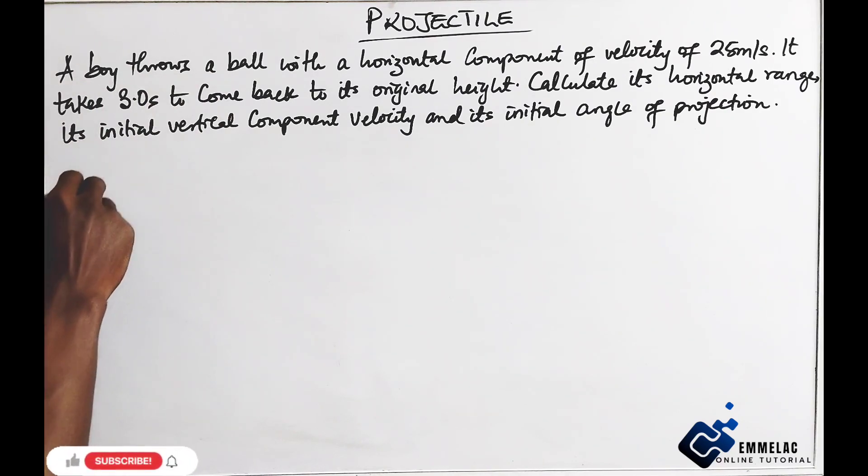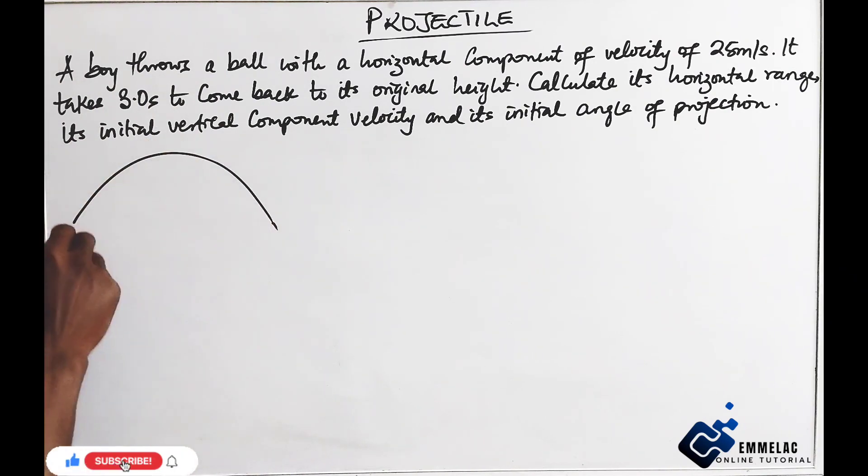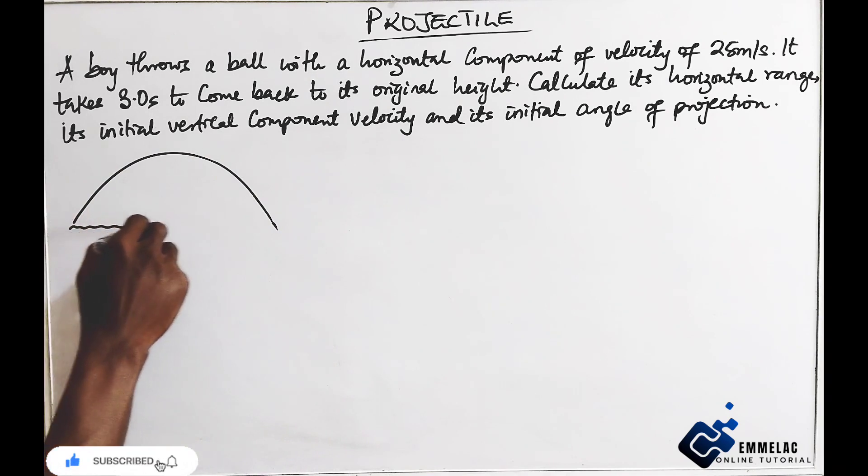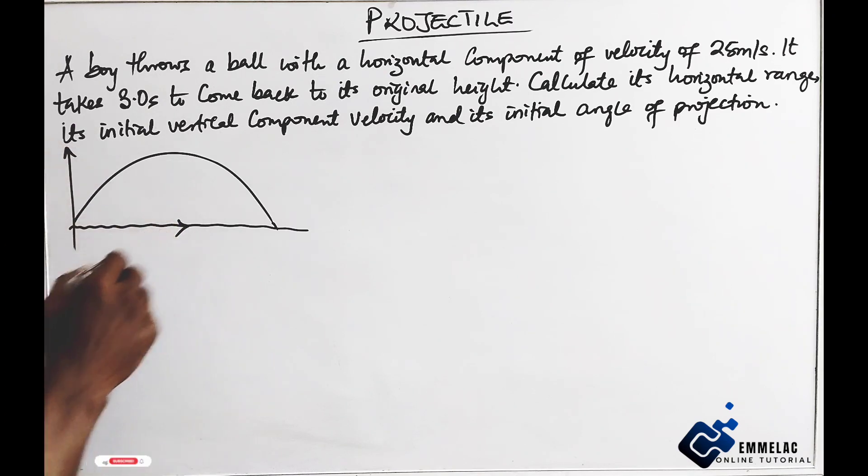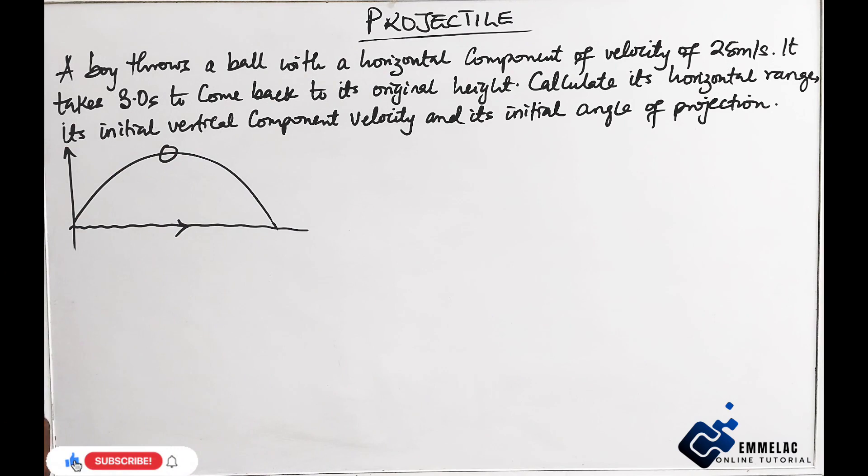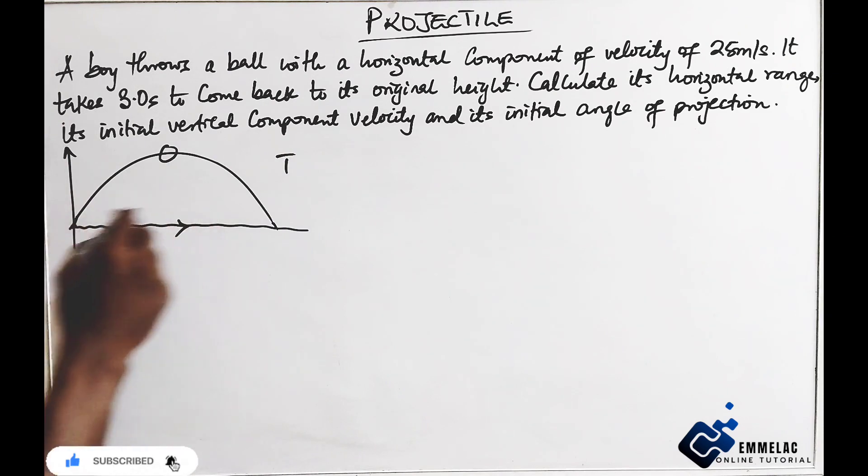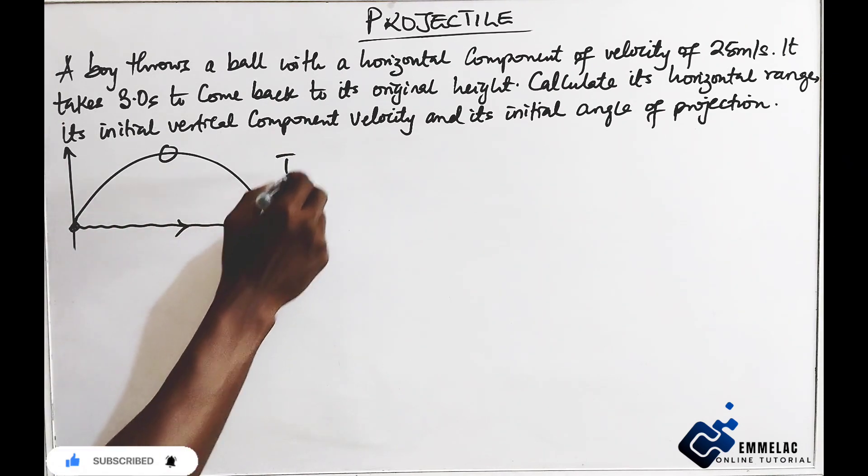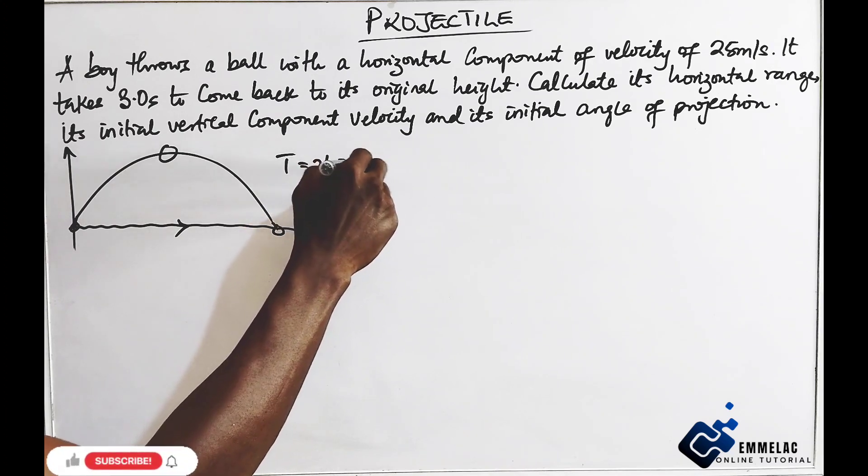The truth, we will say this is the ground state. The vertical component, horizontal component, maximum height. Now the total time of flight from this point to this point is 2T, which is 3 seconds.